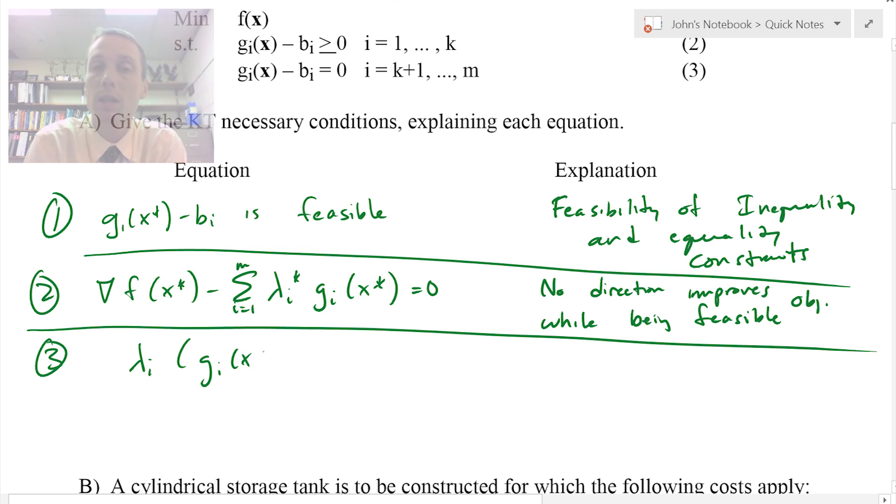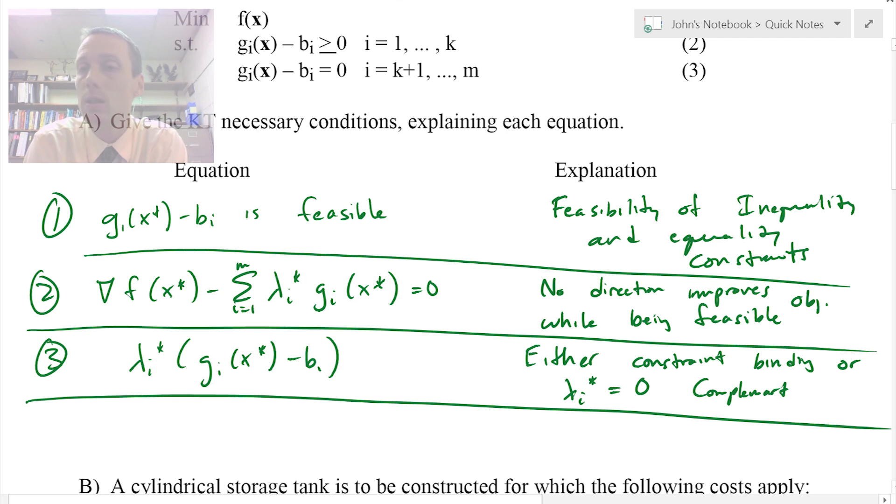Then the next one is lambda i times the constraints has to equal zero. This means that either the constraint is binding or lambda i has to equal zero. This is called complementary slackness.